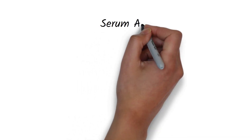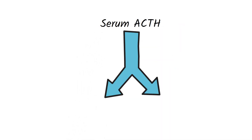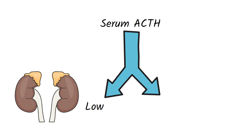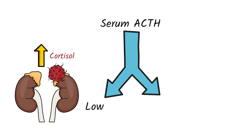After confirming the diagnosis, we should do a few investigations to determine the cause of Cushing's syndrome. First, we can measure the serum ACTH level. A low serum ACTH level indicates an ACTH-independent cause, possibly an adrenal gland tumor secreting high levels of cortisol. An adrenal gland tumor secreting an abnormally high level of cortisol can inhibit ACTH release from the pituitary.